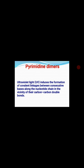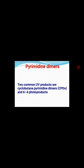UV radiation is the inducing agent for pyrimidine dimer formation. Ultraviolet radiation induces the formation of covalent linkages between adjacent thymine–thymine or cytosine–cytosine bases. The UV light absorbed is in the range of 230 to 280 nanometers. When this light is absorbed, there is a transition of energy from ground state to excited state, and because of this energy exchange, a covalent bond forms between the adjacent bases, resulting in pyrimidine dimers.